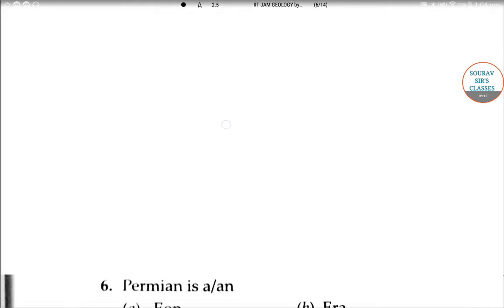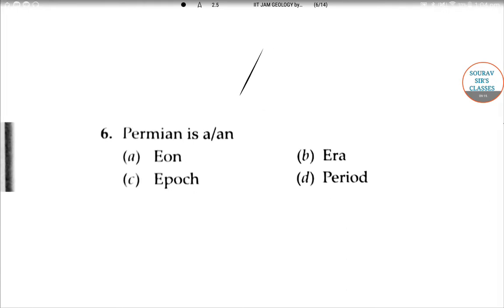The next question is on your screen now. Permian is a or an - eon, era, epoch, or is it period? Both a and an are given here because both vowel and consonant are in the options.